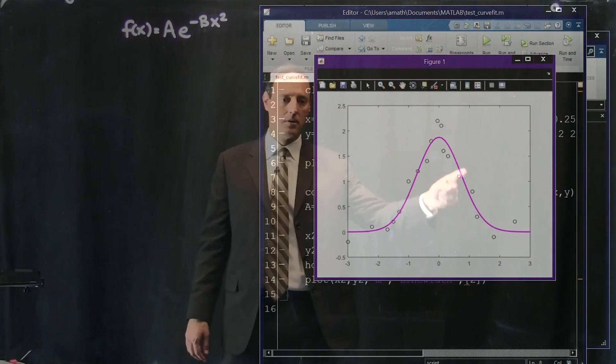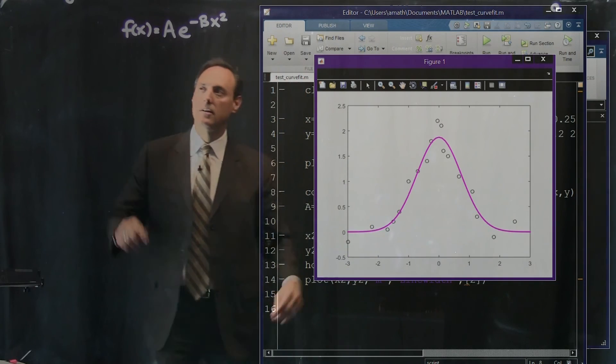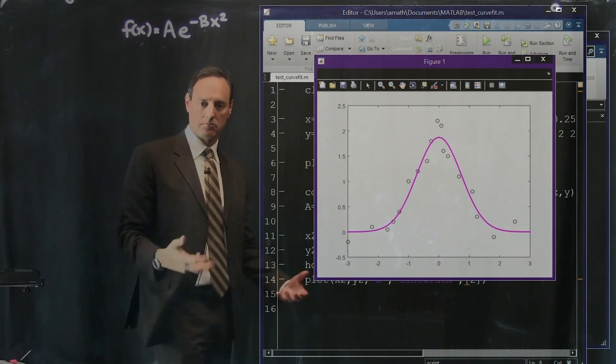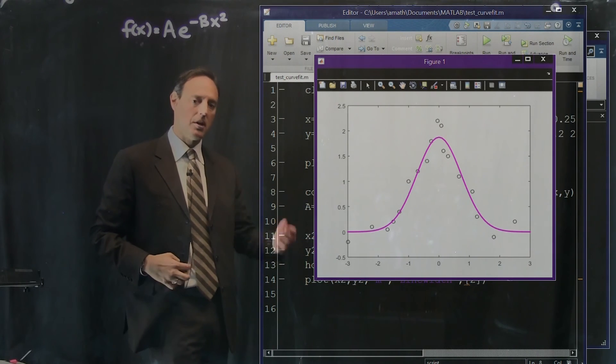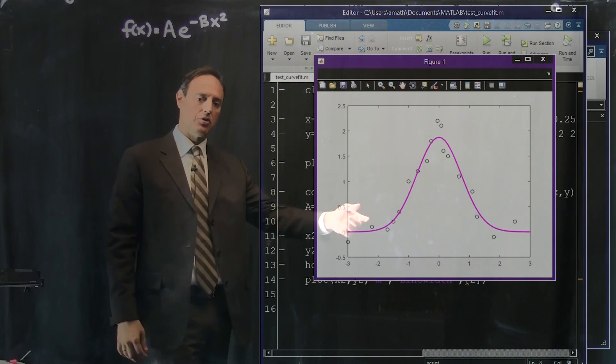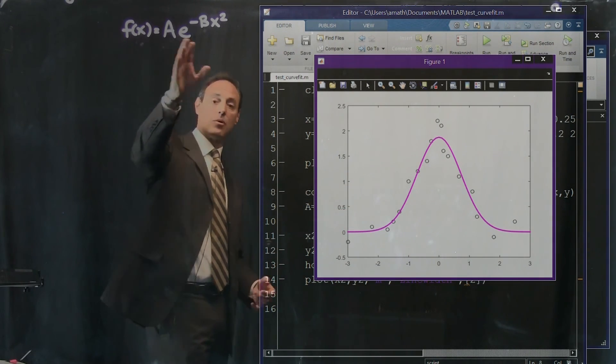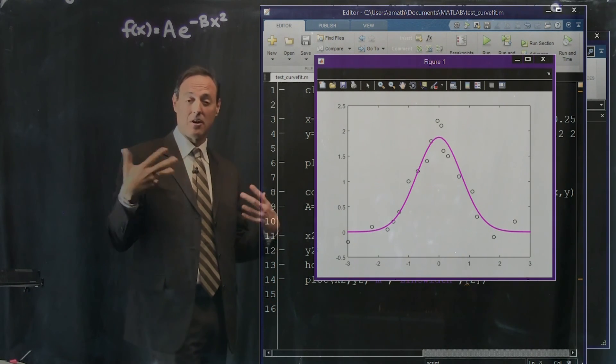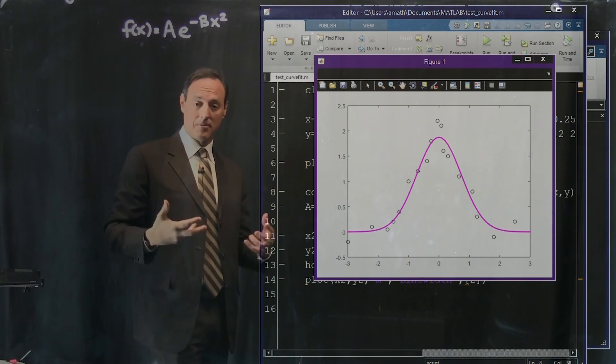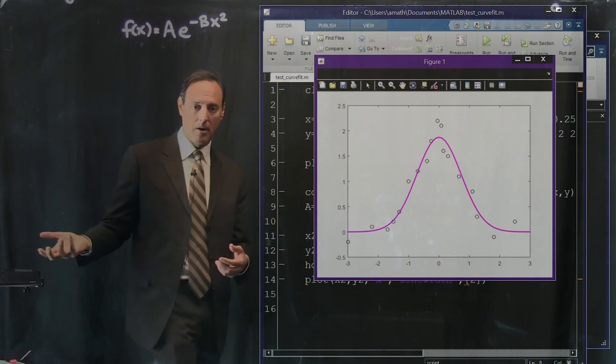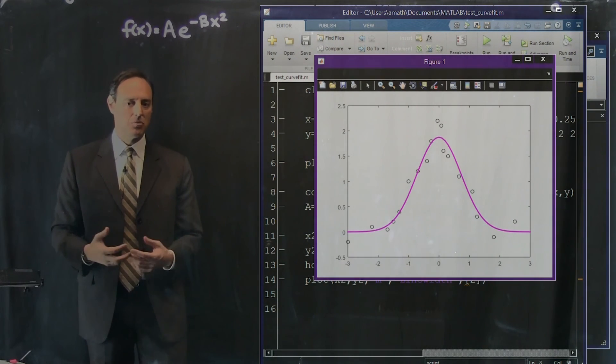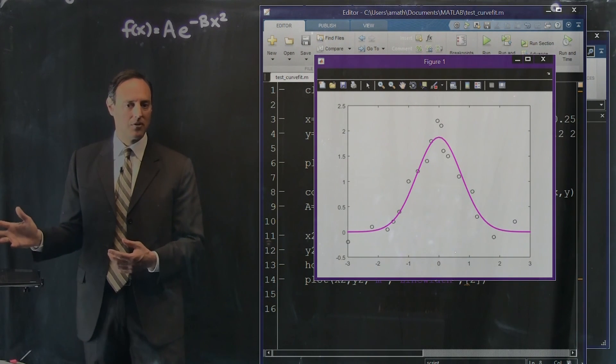This curve here is your best fit function of this form to the data you have, guaranteed. It's an optimization algorithm. It converges onto that. And so you can start seeing that I could do more fancy curve fits and nonlinear curve fits. This is solving a nonlinear system of equations for you, and it's very powerful. fminsearch is just a fantastic optimization routine that's very easy to access.